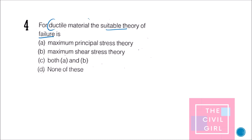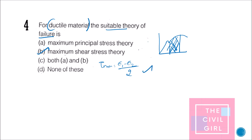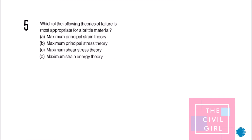Question 4: For ductile material, the suitable theory of failure is maximum shear stress theory. This is because ductile materials take into account both elastic and plastic properties — the plastic portion after the yield point in the stress-strain curve is considered. Maximum shear stress theory uses tau_max = (sigma_1 − sigma_2) / 2, which accounts for this.